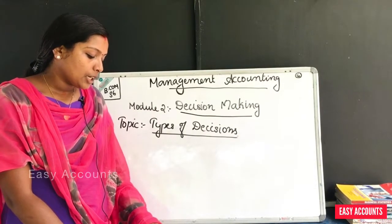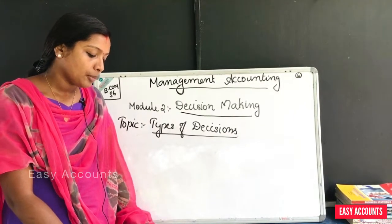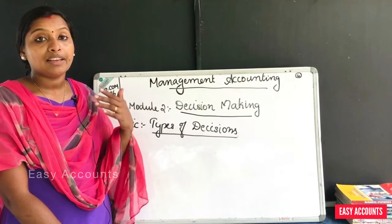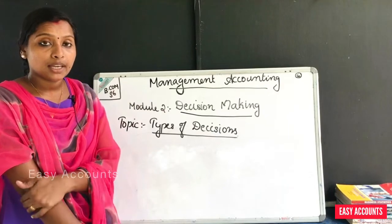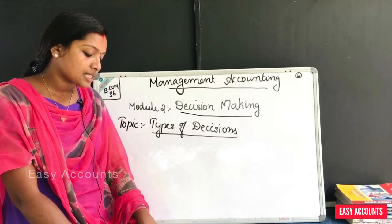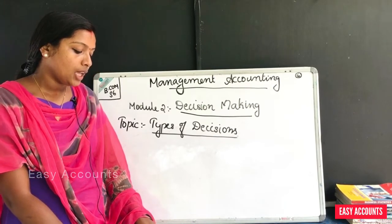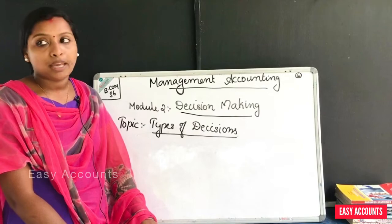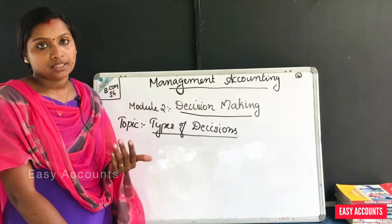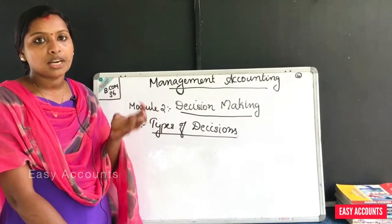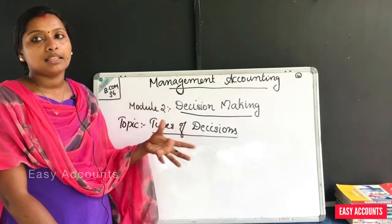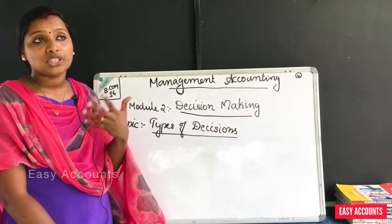Next are major and minor decisions. Decisions that have a long-range impact on the business are called major decisions. For example, the replacement of men by machines in a business operation.